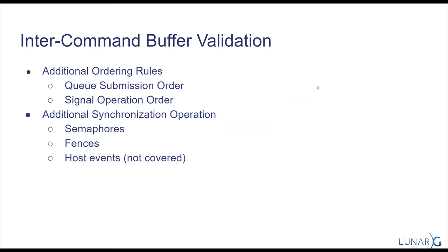Everything we talked about so far were operations within a command buffer, but we can also submit many command buffers. There are additional ordering rules: queue submission order and signal operation order. These say that the order of operations beginning at top of pipe follows: commands within a command buffer, command buffers within a batch, batches within a submission, and submissions in order — and similarly for signal operation order. To impose additional order between batches or submissions of command buffers, there are semaphores, fences, and host events.